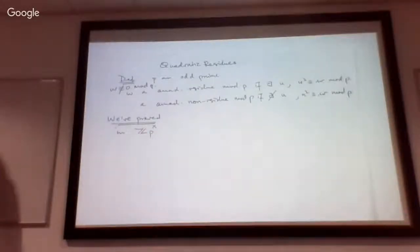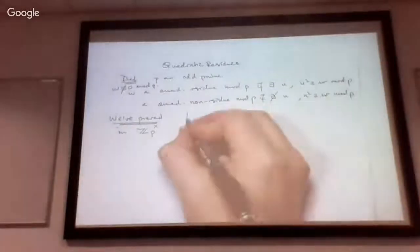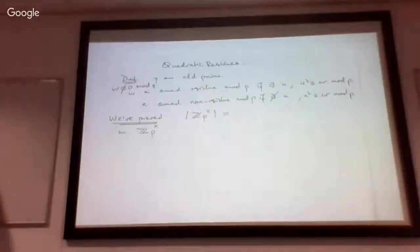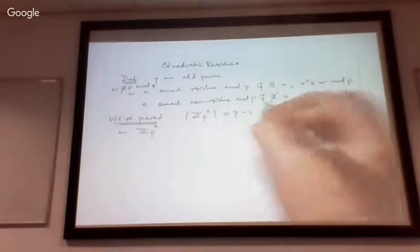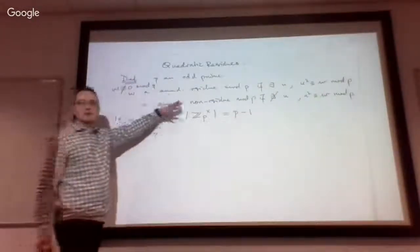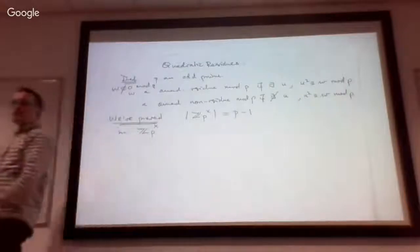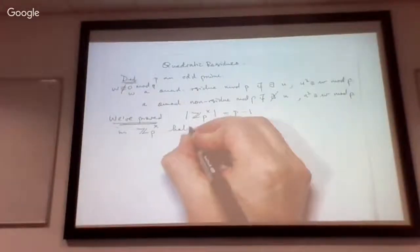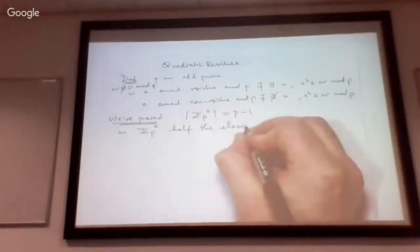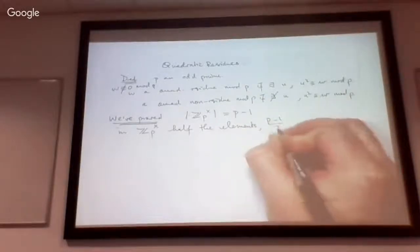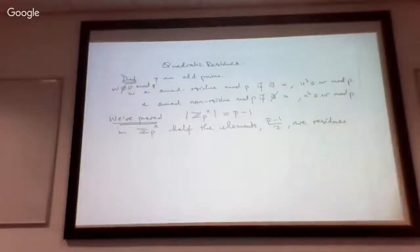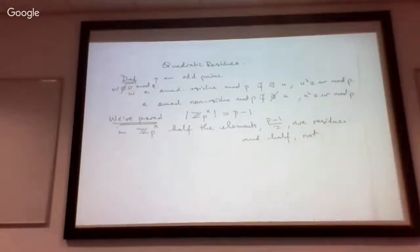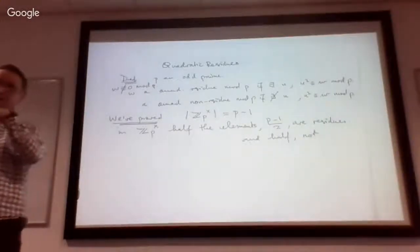Now we've already proved one significant thing. Remember how many things are in Zp — how many things are in the multiplicative group modulo p? There are p minus 1. p is an odd prime number, so p minus 1 is an even number. We've already proved that it splits exactly half and half: p minus 1 over 2 are residues, and by definition half are non-residues. We proved that yesterday morning.